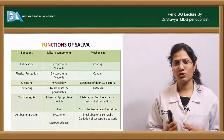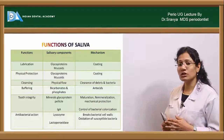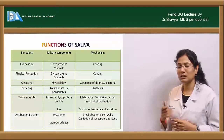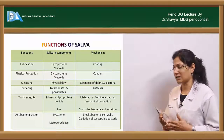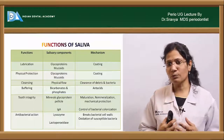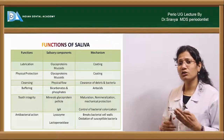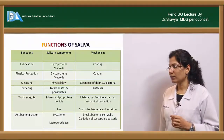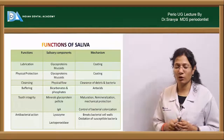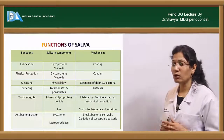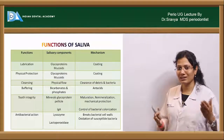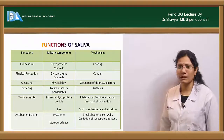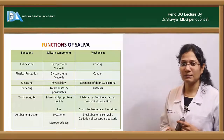Tooth integrity is maintained because of minerals, glycoproteins, and immunoglobulin A in saliva, which also control bacterial colonization. Because of glycoproteins and mineral products, there is constant remineralization and maturation of defective areas on tooth surfaces. The antibacterial function of saliva is mainly because of lysozymes and lactoperoxidase enzymes, which act against bacteria by breaking the bacterial cell wall and causing oxidation of susceptible bacteria.